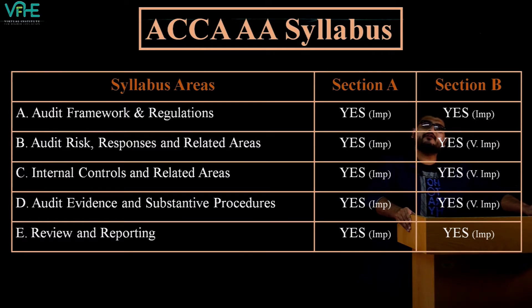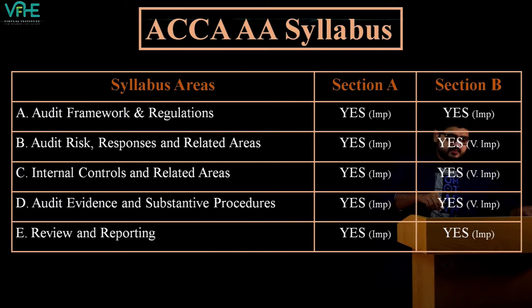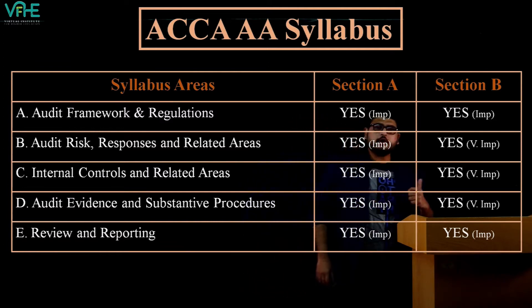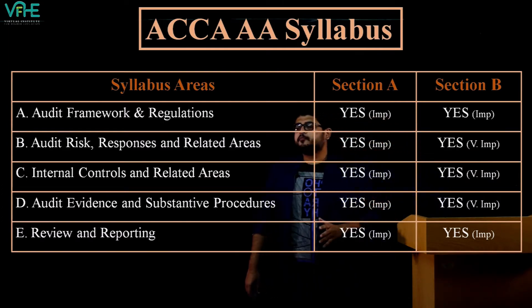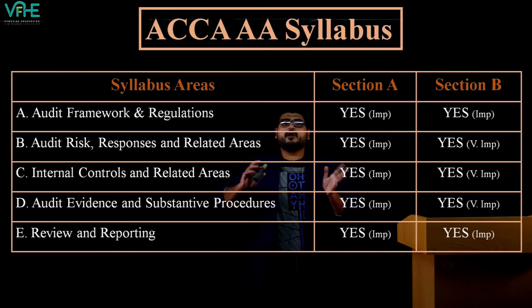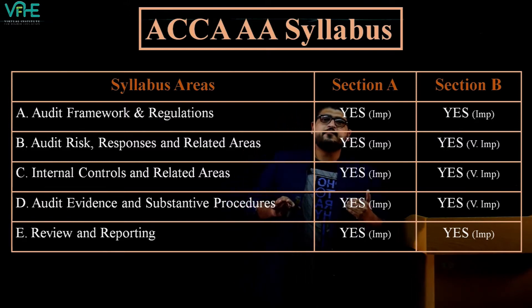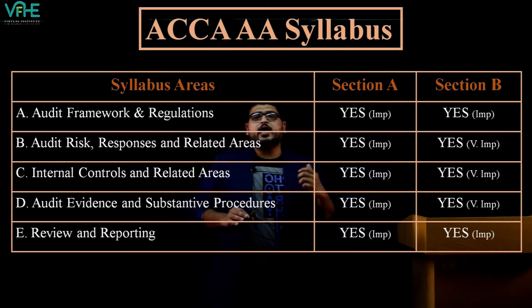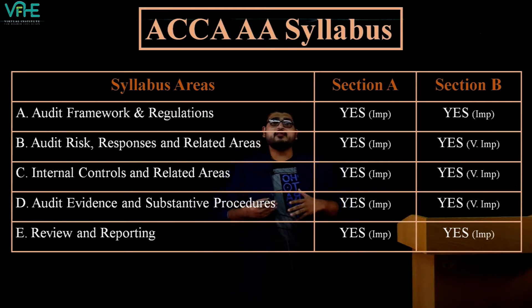For Section B, there are areas marked as 'important' and 'very important.' The three most important areas are: Audit Risk — 15 to 20 marks; Internal Controls — 15 to 20 marks; and Audit Evidence and Procedures — 15 to 20 marks. Together, these cover around 85 to 90 percent of the 70 marks in Section B.